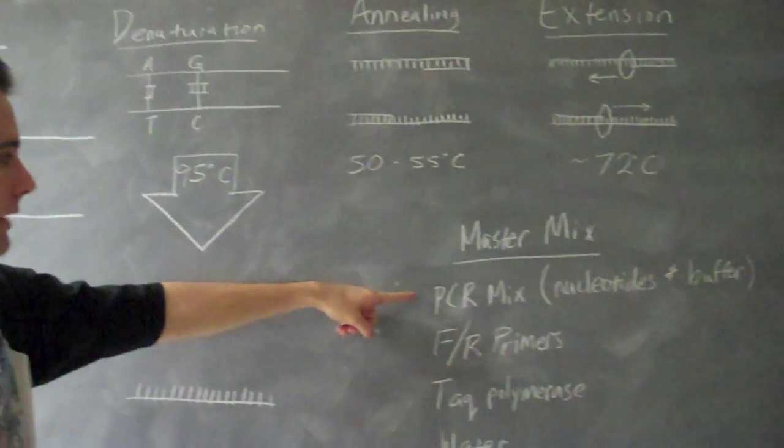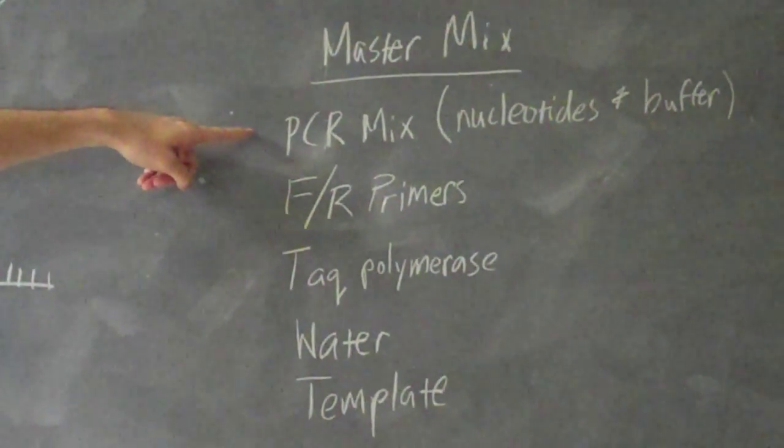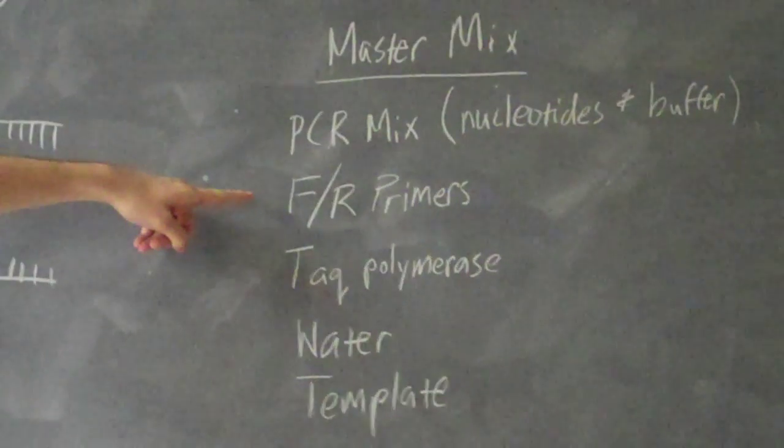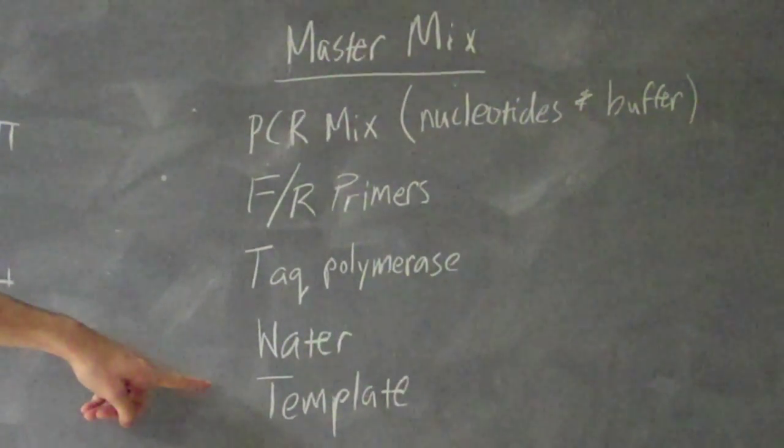So in order to make your master mix, you need PCR mix, which includes the free nucleotides and the buffer for the reaction, your forward and your reverse primers, taq polymerase, water, and your DNA template.